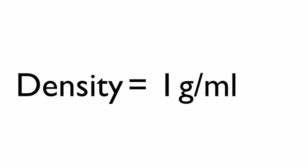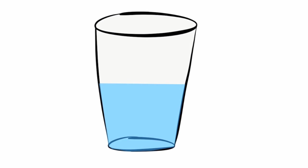Water's density is 1 gram per milliliter. Objects with a density greater than 1 will sink when placed in water. Objects with a density of less than 1 will float when placed in water.